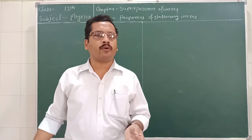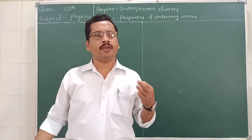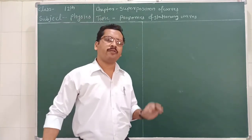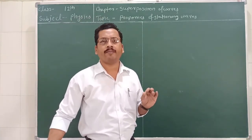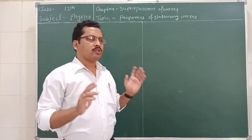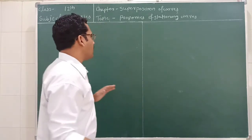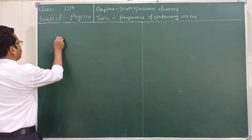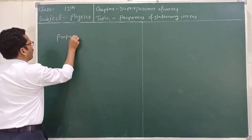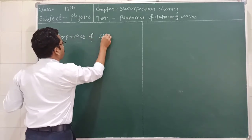What are nodes? Nodes are the points which do not vibrate, or vibrate with the minimum amplitude. And what are antinodes? Antinodes are the points which can vibrate with the maximum amplitude. So today we are going to learn these properties of the stationary wave.